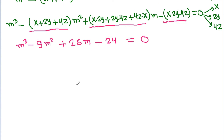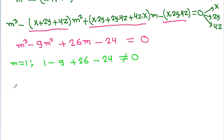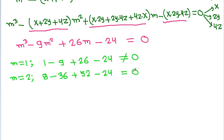At m equals 1: 1 minus 9 plus 26 minus 24 equals 27 minus 33, which is not equal to 0. At m equals 2: 2 cubed is 8, minus 9 times 4 is 36, plus 26 times 2 is 52, minus 24. So 52 plus 8 is 60, and minus 36 minus 24 is minus 60. That equals 0.